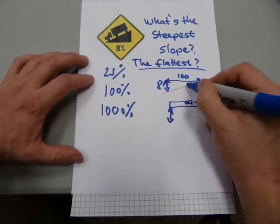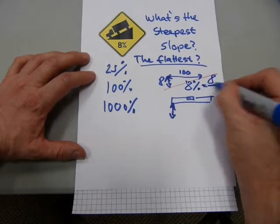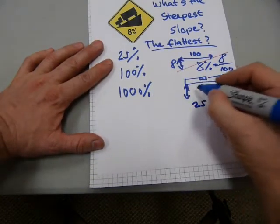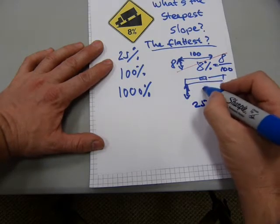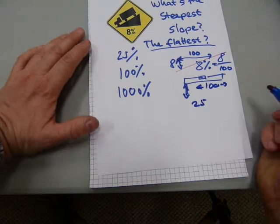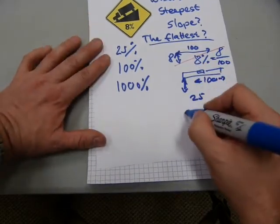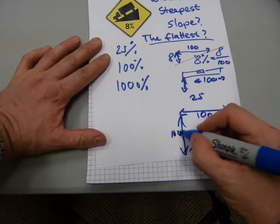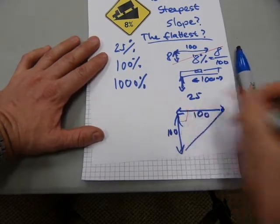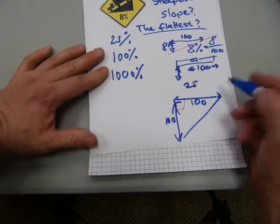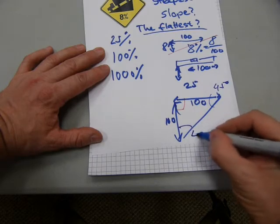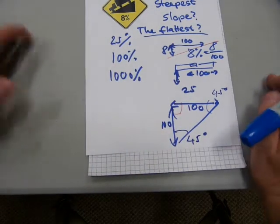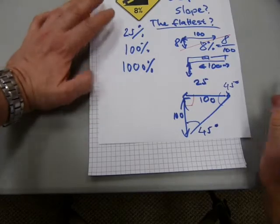If there is an 8% slope, that's because 8% means 8 over 100. 25% consequently means that 25 would be the vertical drop and 100 would be the horizontal run. It is possible to have 100 inches horizontal and 25 inches vertical, and it is also possible to have 100 inches horizontal and 100 inches vertical. That 100 by 100 with a right angle gives you an isosceles triangle — a 45-45-90 triangle. That's kind of steep, so that would be a 100% slope.